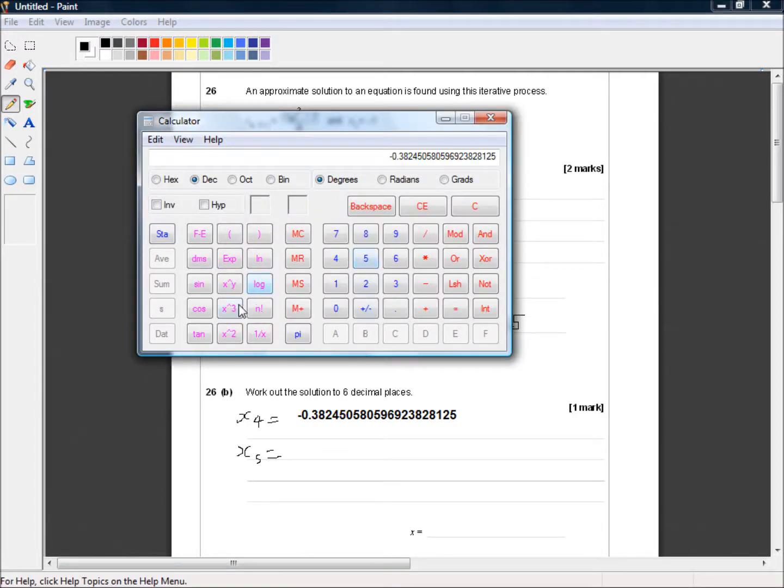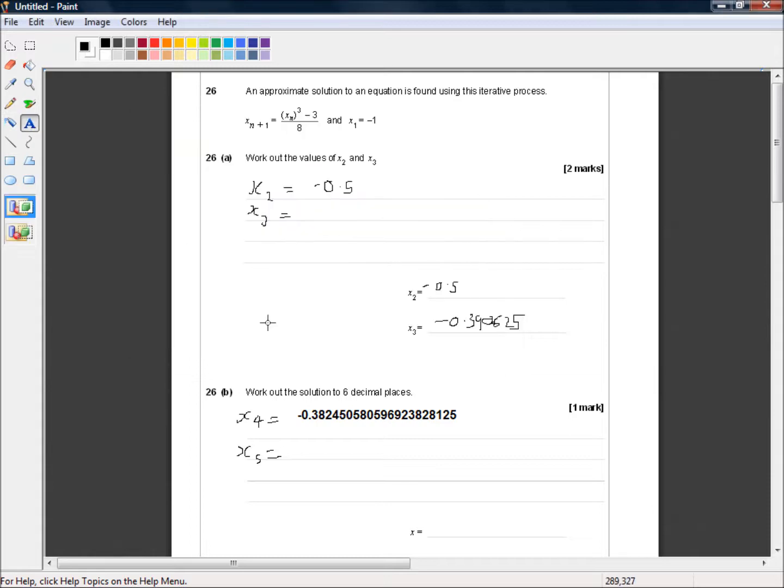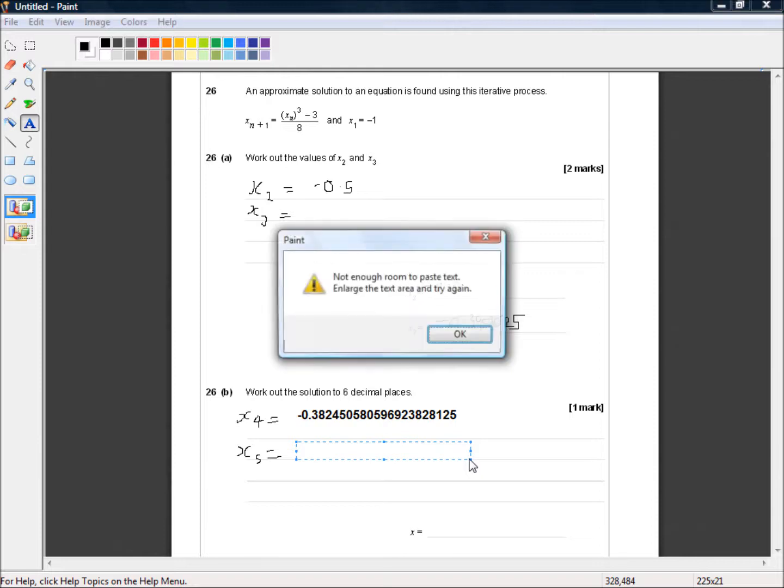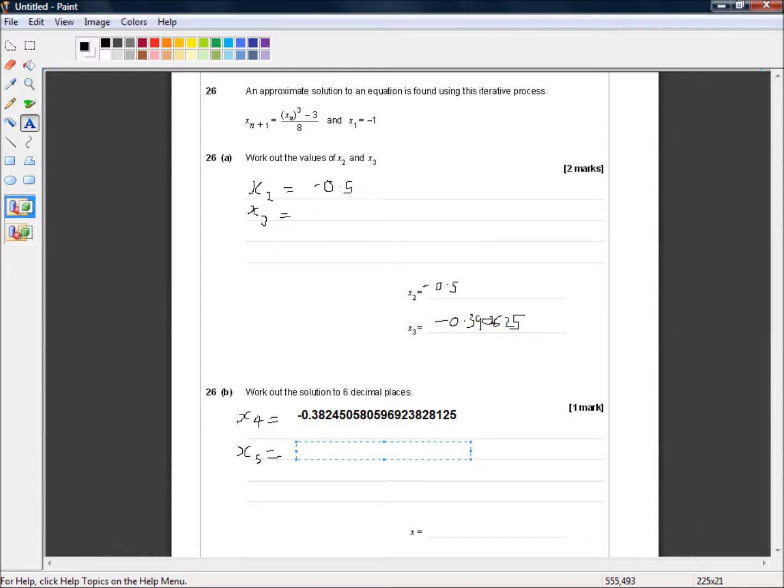So x5, we need to cube this, subtract 3, divide by 8. And I'm going to copy that and I'm going to paste that. So we can write that down. Let's create some more room if there's not enough room to paste text. There we go. So we need to go on further because that's not the same number.